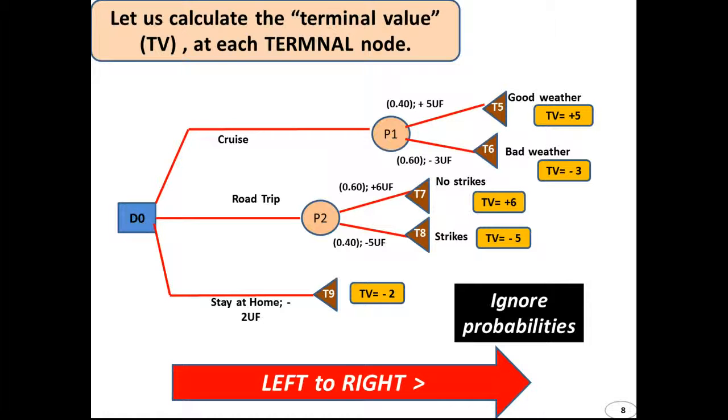And always remember a path must begin and end with a node. The next step is to calculate the terminal values TV for each terminal node. And for this we go from left to right on our diagram and we ignore the existence of probabilities.